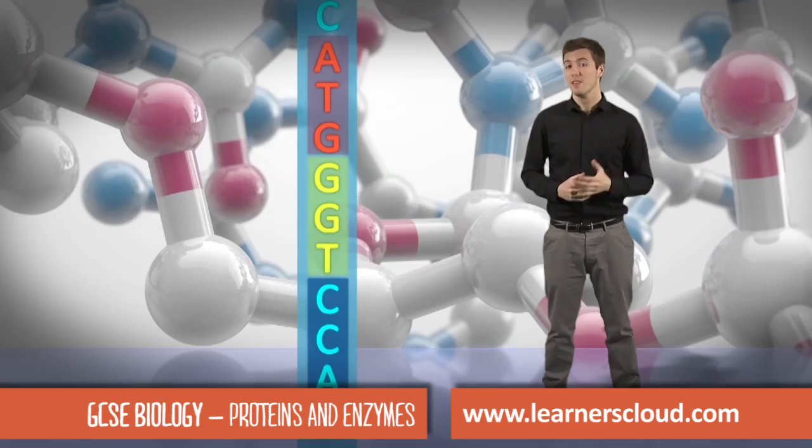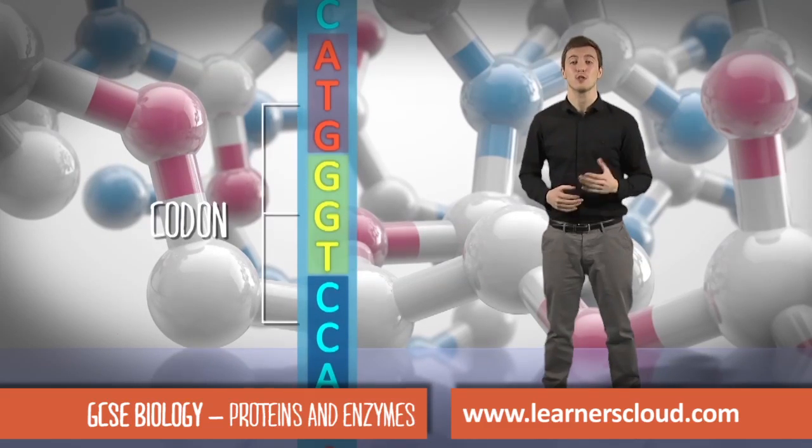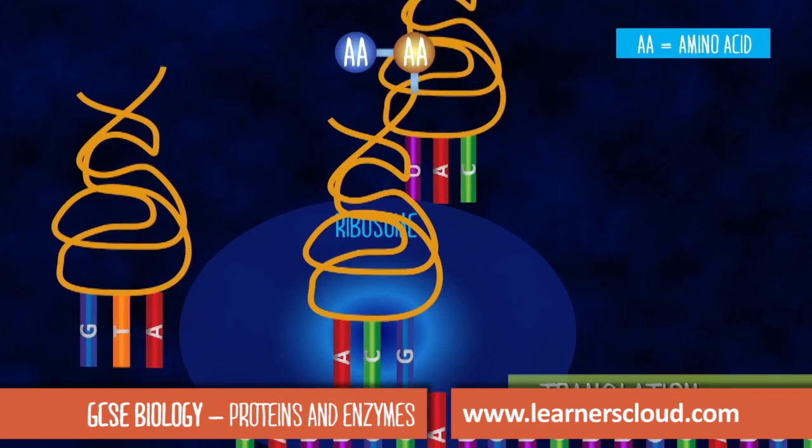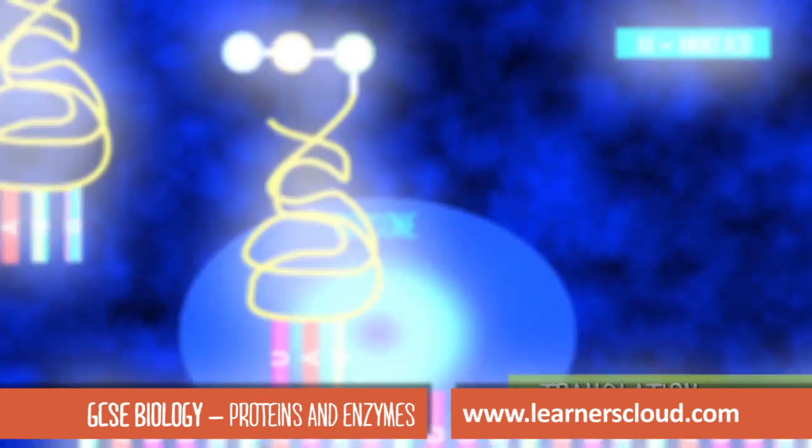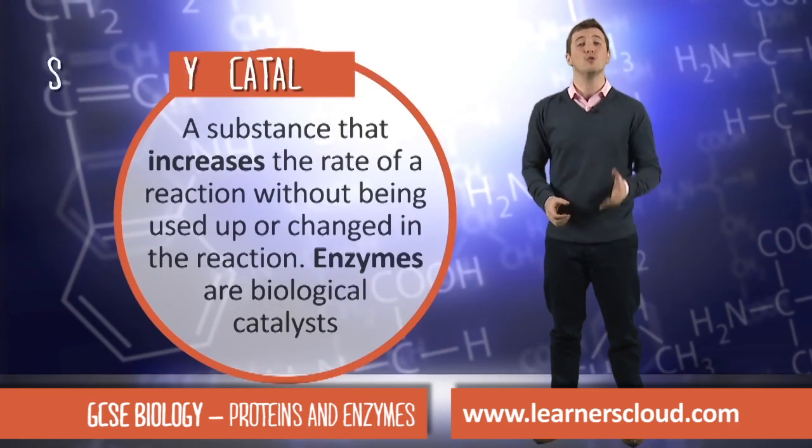These sets of three bases are known as a triplet or a codon. The ribosome makes sure that the amino acids are joined together precisely to form the polypeptide gene. Here's a definition that you need to know about for your exam.